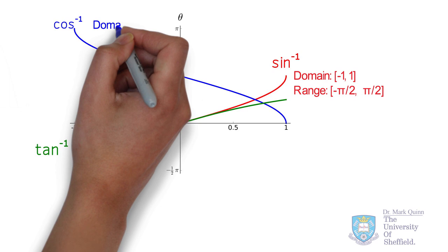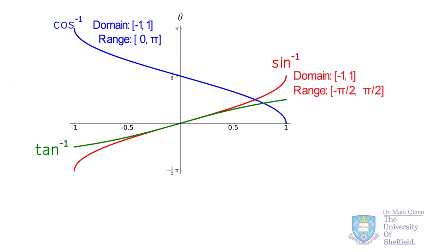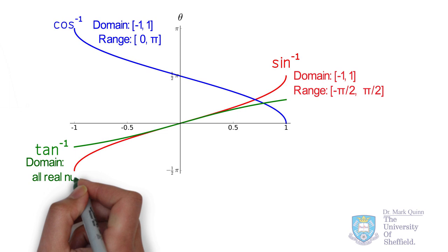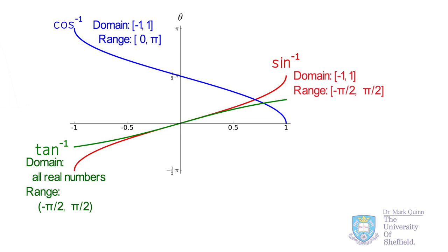For inverse cosine, the range is from 0 to pi. The inverse tangent function has a much greater domain, including all real numbers between minus infinity and plus infinity. Its range, however, is minus pi/2 to plus pi/2.